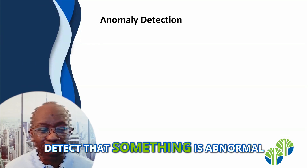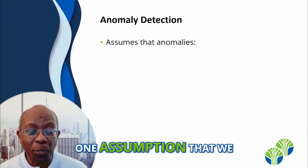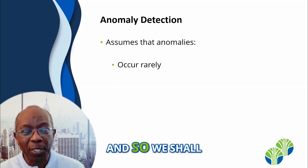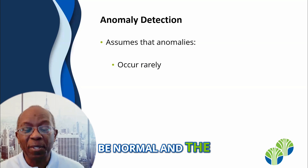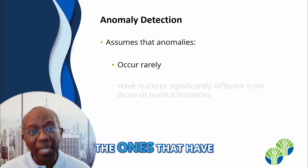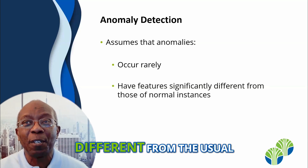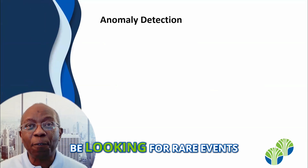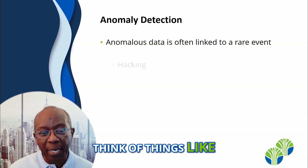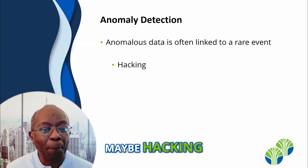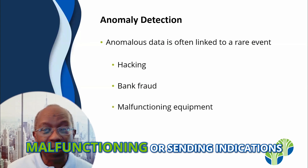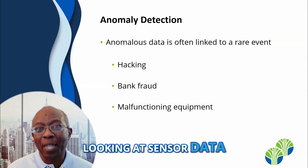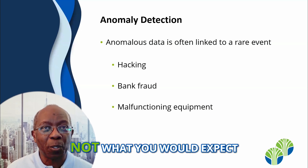So how are we going to detect that something is abnormal? One assumption we shall make is that anomalies are going to occur rarely, so most of our data is going to be normal. The data items that stand out — the ones that have features significantly different from the usual — are the ones we're going to term abnormal. Think of things like hacking, bank fraud, equipment that is malfunctioning or sending indications that it will soon malfunction — looking at sensor data and noticing that some readings are not what you would expect.